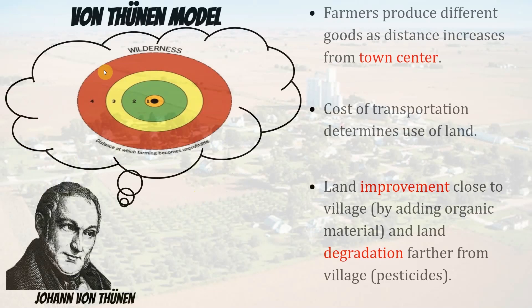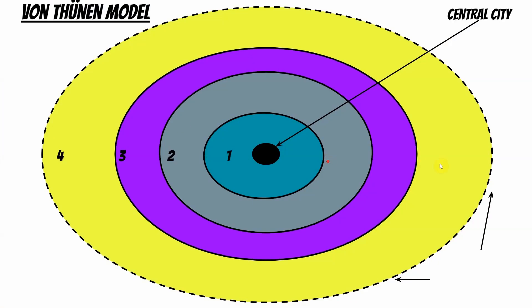Johann realized that everyone lives in the city's center, and as you rotate outward, the agricultural process changes. In ring one — closest to the city — you find the growing of fruits and vegetables and the production of milk products like cheese and milk. They have to be close to the city because once harvested or made, they start to spoil and go rancid quickly. This is sometimes called the milk shed — if located too far away, the products would go bad before reaching the market.